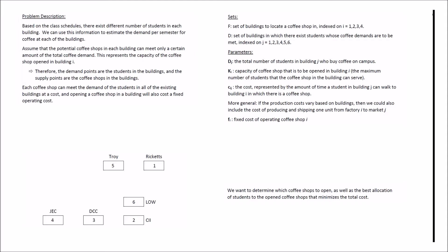To be more formal, we have a set of supply points which are the potential coffee shop locations and a set of demand points which are the students in the buildings. The map on the bottom left shows six buildings: Troy and Low buildings. These are relatively small buildings, therefore it is not feasible to locate a coffee shop in them. Therefore we are going to consider Ricketts, CII, DCC and JEC as our potential coffee shop locations. We have six buildings with coffee demand, giving us four supply points and six demand points.